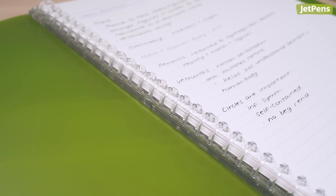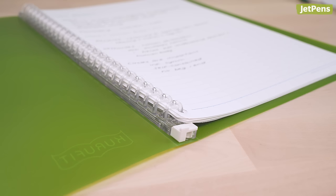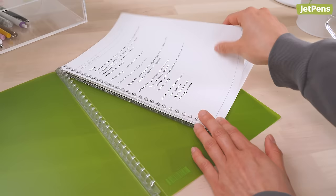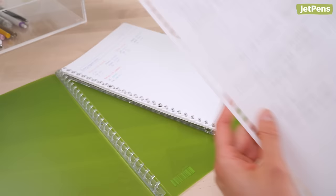The binder has rings that are easy to open. Just unhook the white tab at the bottom of the rings and slide them apart. They're also quiet, so you won't bother any of your classmates.